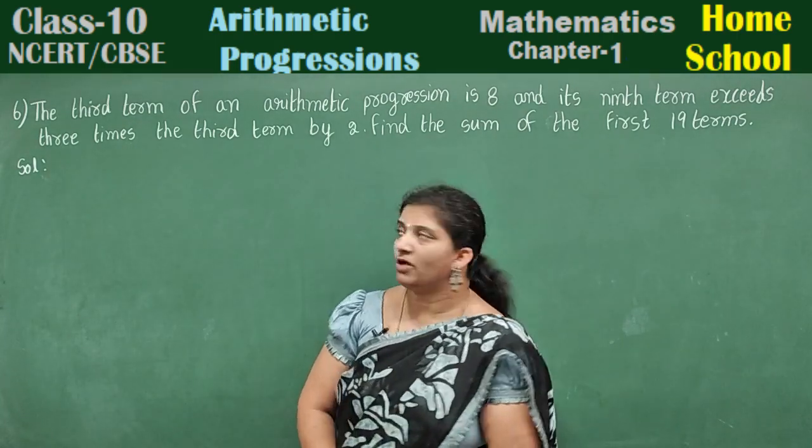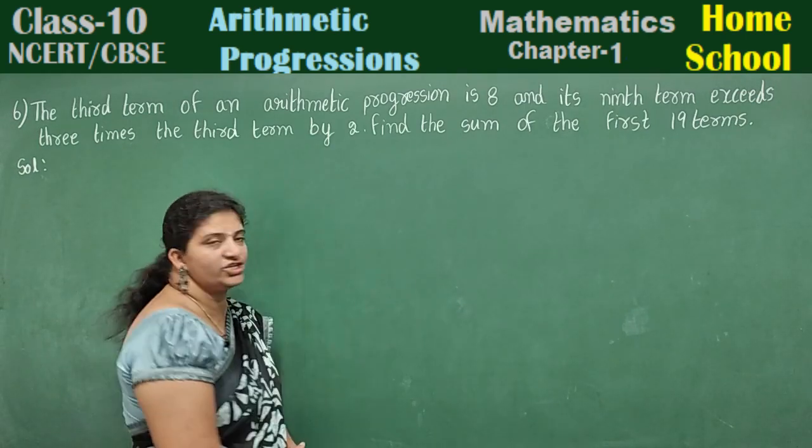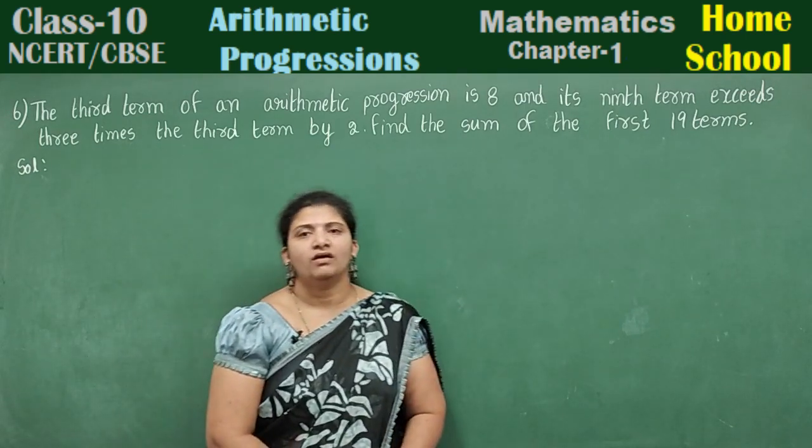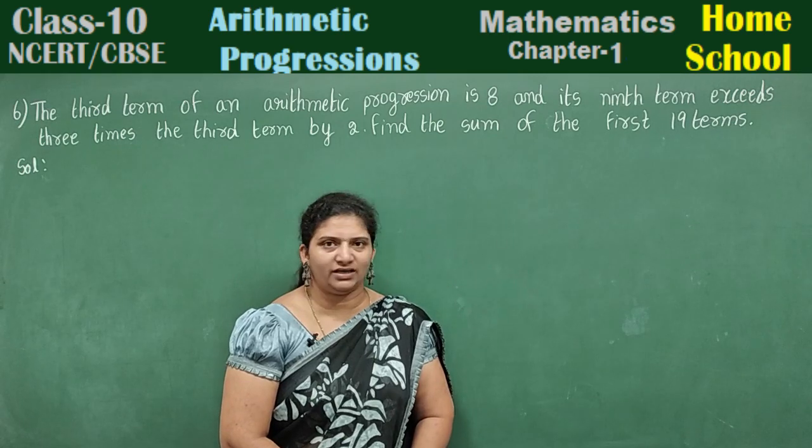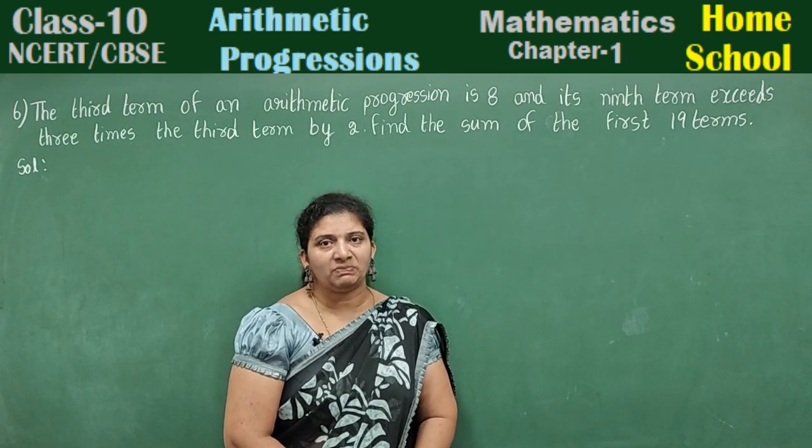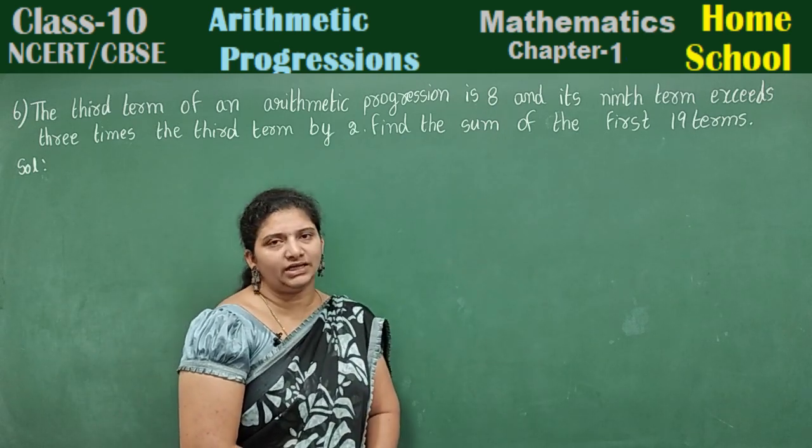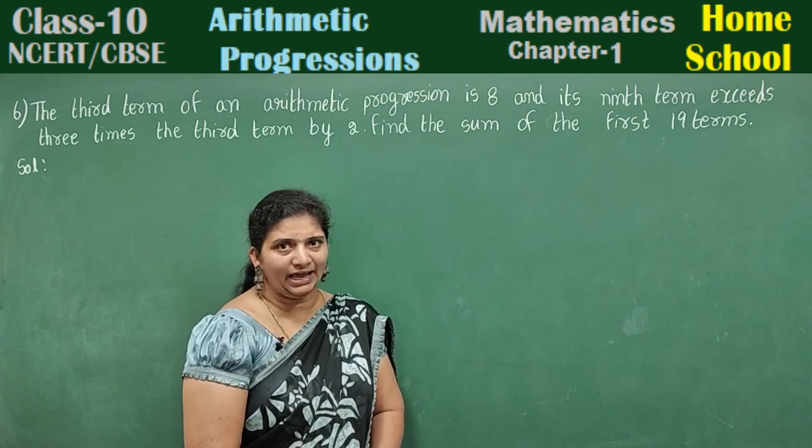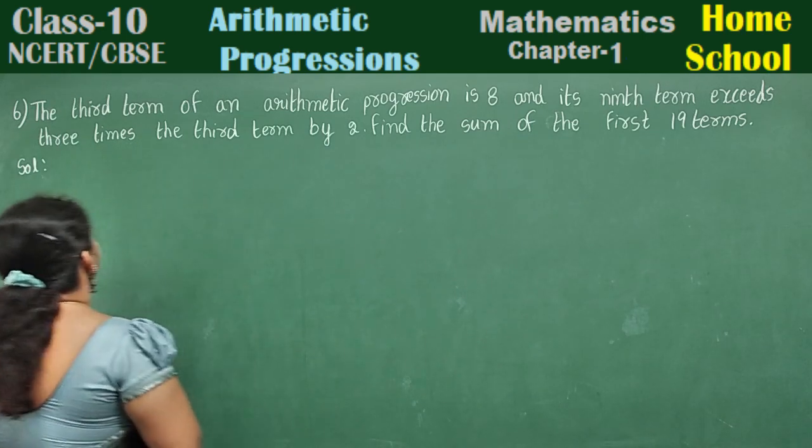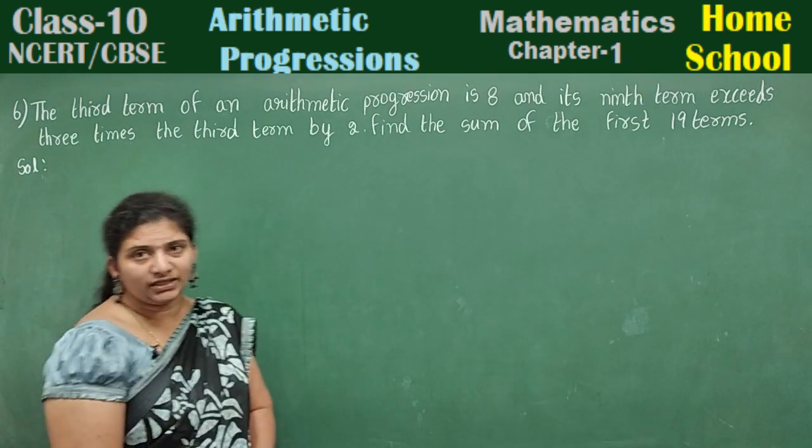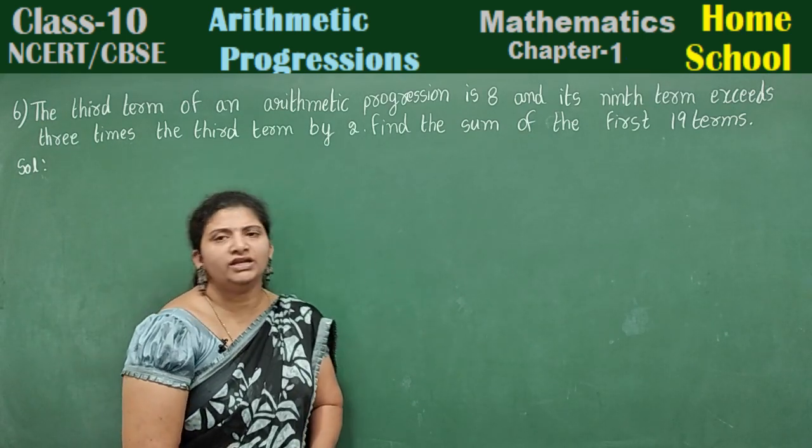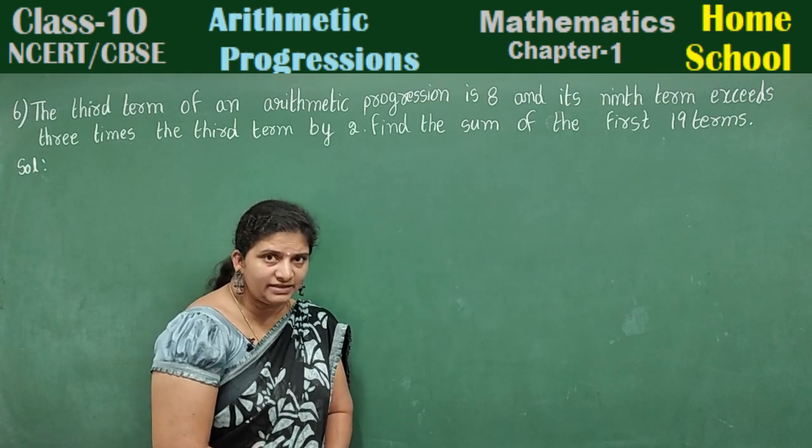The third term of an arithmetic progression is 8. Third term means A3. It is in AP. A3 value is 8. And its ninth term, A9, exceeds three times the third term by two. We need to stop here. Understand this sentence.